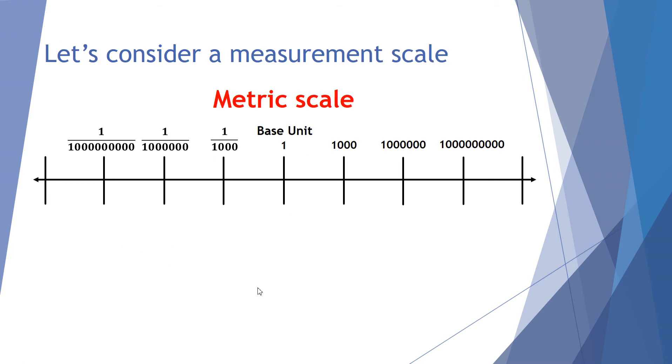Let's have a look now at the scale. So traditionally the metric scale, when we look at the prefix, the names we use such as milli, micro, nano, mega, they're all based on increments going up by a factor of a thousand. So if a base unit is one, if we times that by a thousand we get a thousand, times that by a thousand we get a million, times that by a million we get a billion. And going back the other way from one, if we divide by a thousand we get one thousandth, divide that by a thousand we get one millionth, divide that by a thousand we get one billionth.